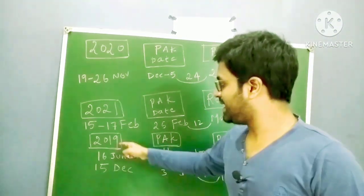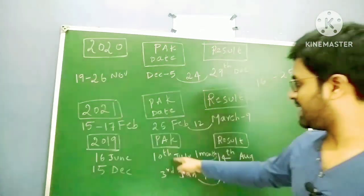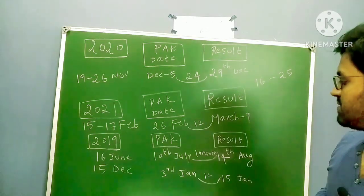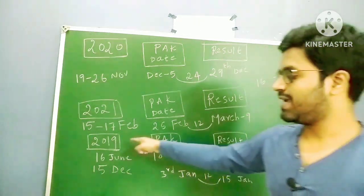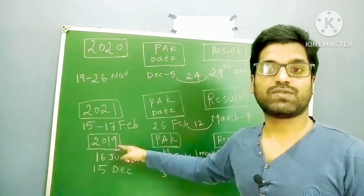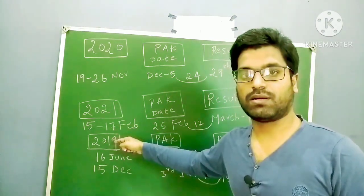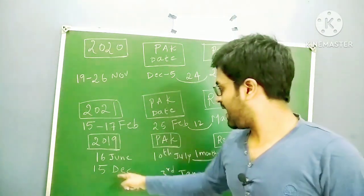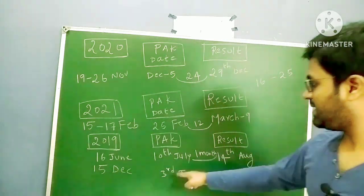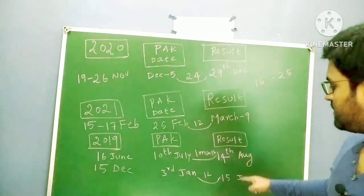And 2019, if you take June and December. June exam, 16th June conducted, 10th July is the provisional answer key, and 14th August was the result date. So the difference again one month because 2019 June, Corona was so much intense. But compared to December 2019, if you take 2019 December, 15th December was the exam date and 3rd January provisional answer key and result date was 15th January, again 12 days.